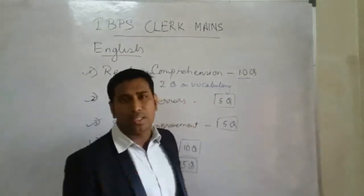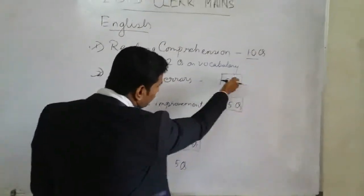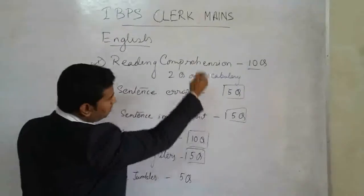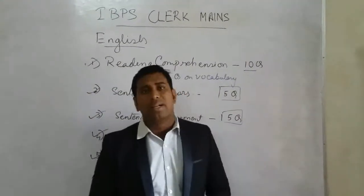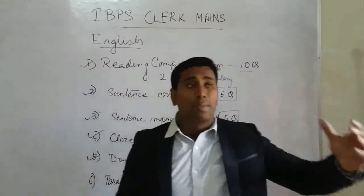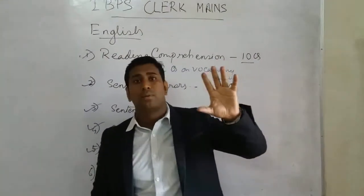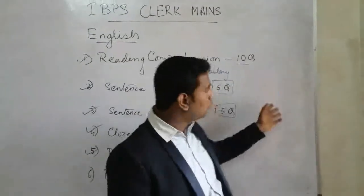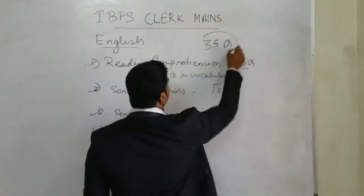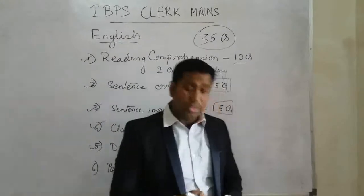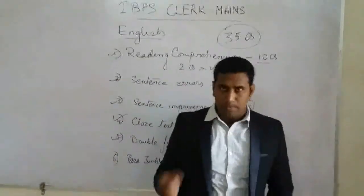With vocabulary questions being easy to solve, let's count: cloze 10, sentence improvement 5, double fillers 5, sentence series 5, then 8 questions from reading comprehension — that is 33 to 35 questions solved in 30 minutes. We are reaching very near to our milestone. This is the overall strategy for topics they are going to ask in IBPS Clerk prelims.